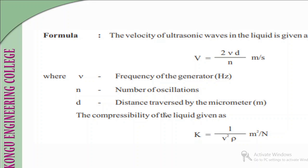To calculate the compressibility of a liquid, the formula to be used is K = 1/(V²ρ), where V represents the velocity of ultrasonic waves and ρ (rho) represents the density of the given liquid.